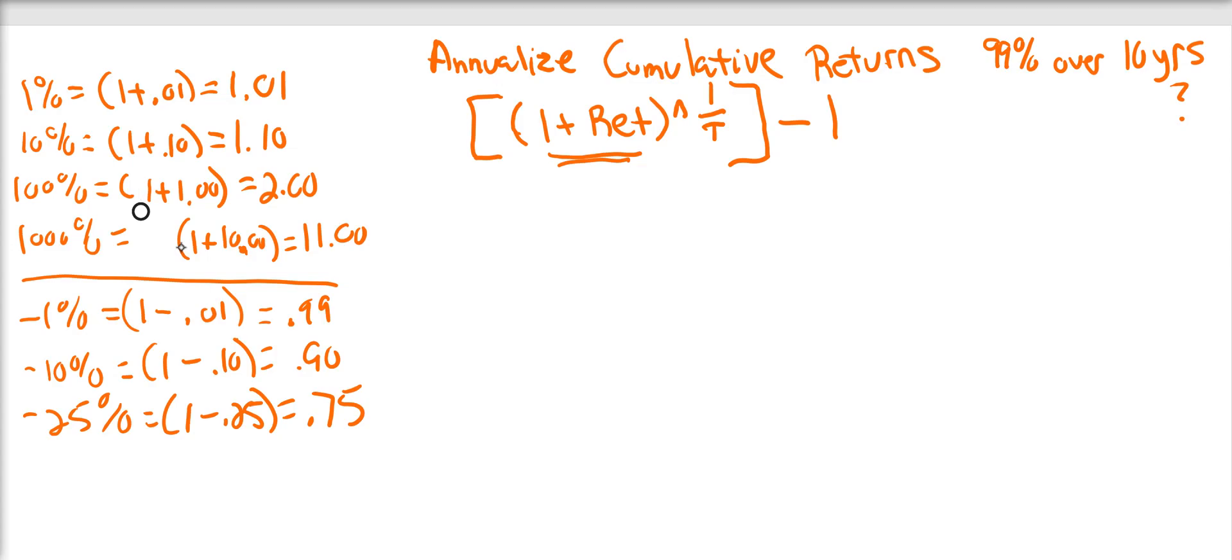So let's first start off with a positive example. We're making 99% over 10 years. And if you remember the rule of 72, this should roughly be around 7.2% or so, a little over 7%, because you've doubled your money. The first thing we do is we take 1 plus, and what's our return? It's 0.99 to the exponent of 1 over 10, because that's the number of years, minus 1.